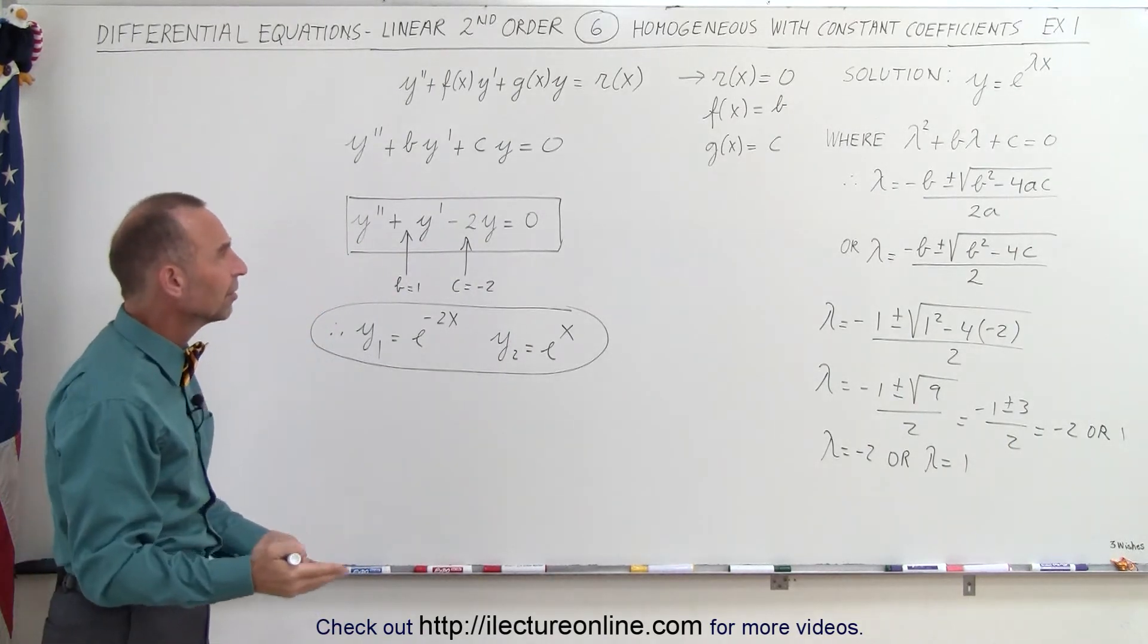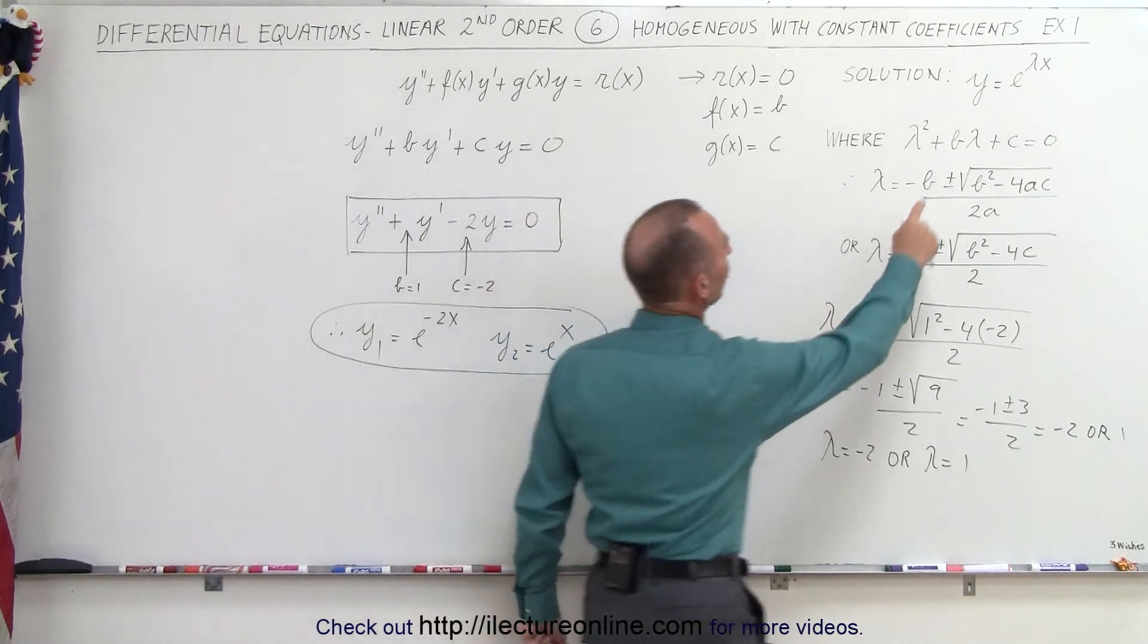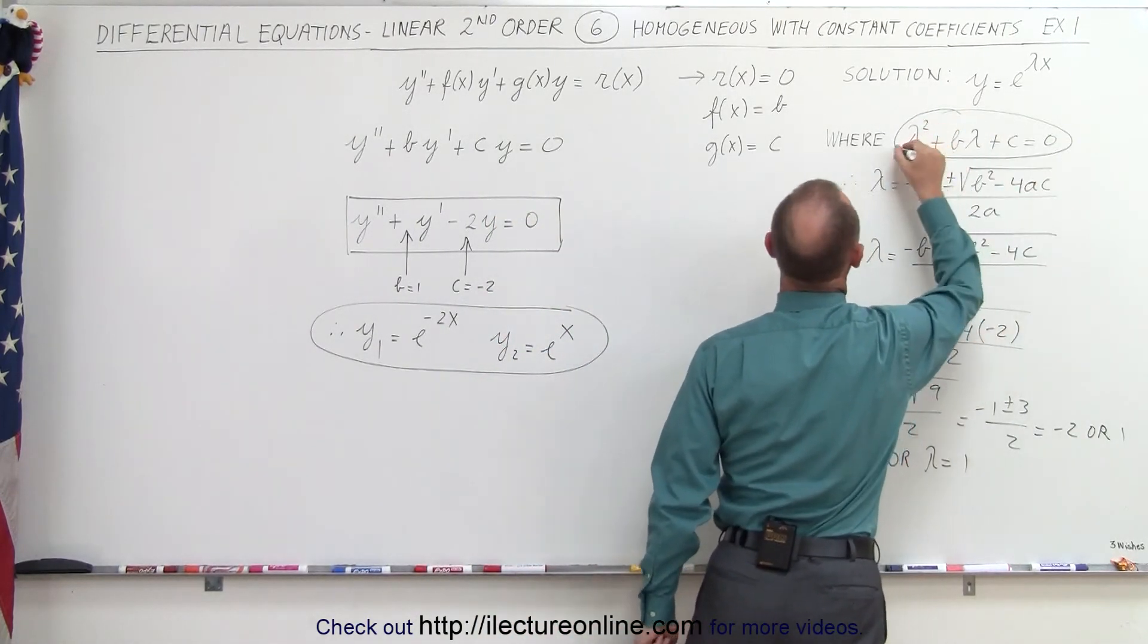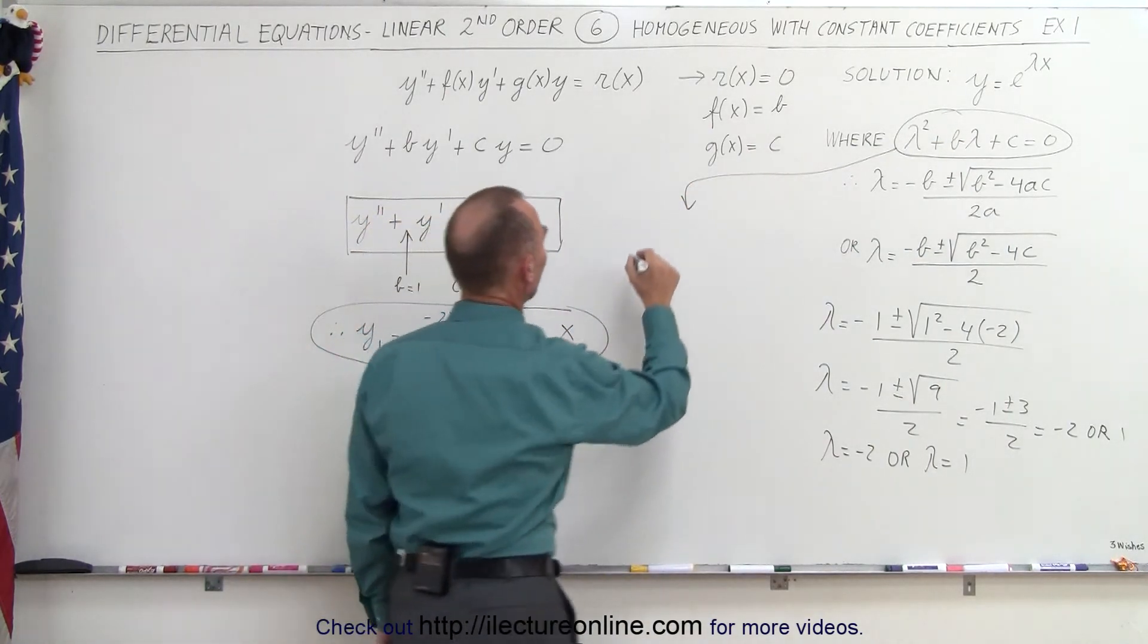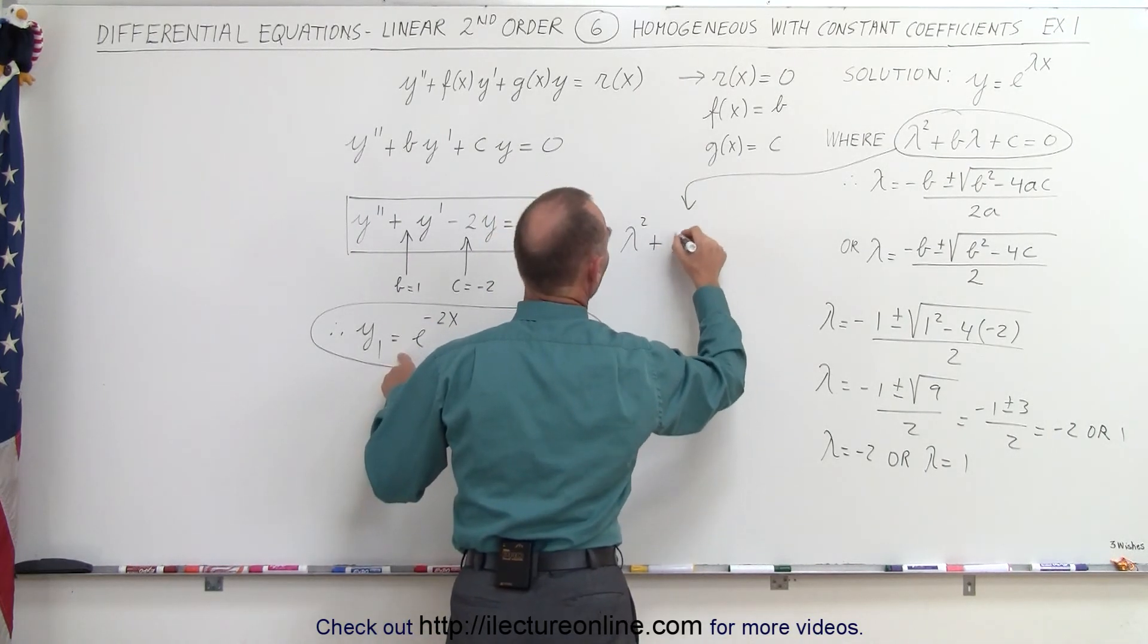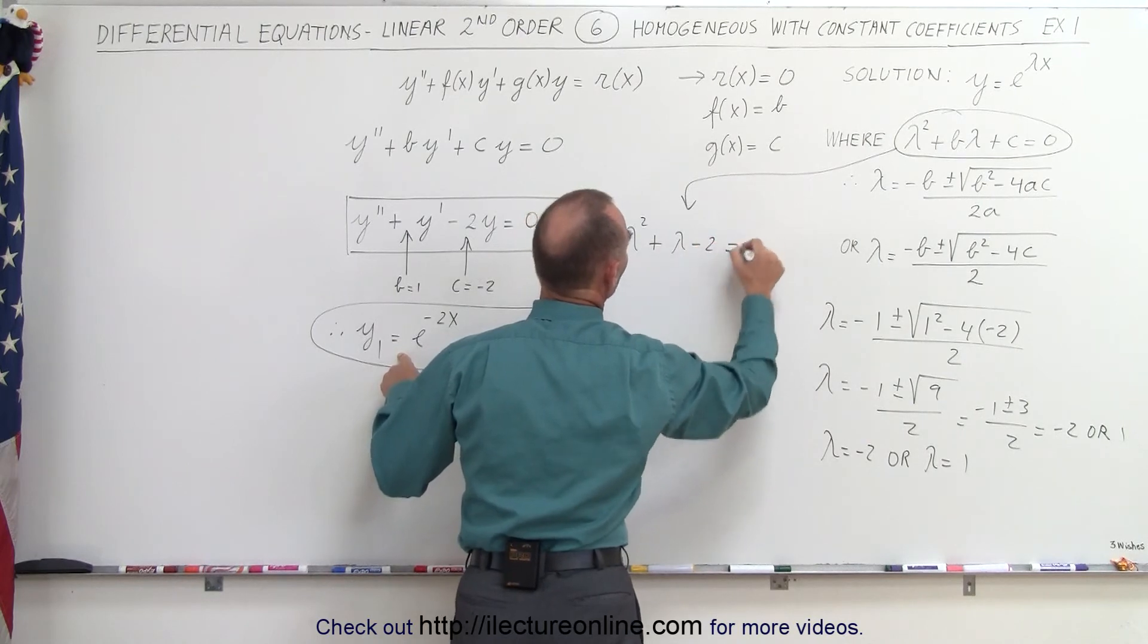Now, another way to find it is to say, I know that this should equal 0, so I'm going to take this equation and plug in b and c and see what we get. So we have lambda squared plus b, b equals 1, so that's plus lambda, plus c, that would be minus 2, equals 0.